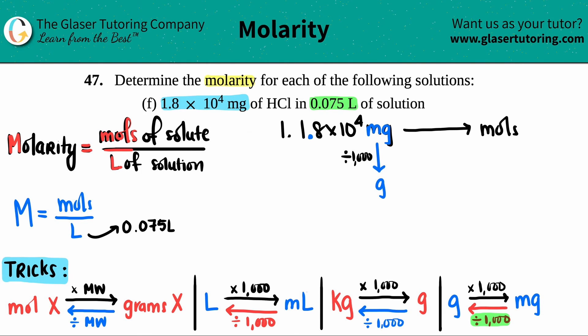Just know that 1.8 times 10 to the fourth is 18,000. 1.8 E to the fourth divided by 1,000 is 18. So now I have 18 grams—18 grams of what? 18 grams of HCl, the compound that was being stated.